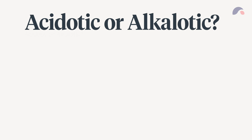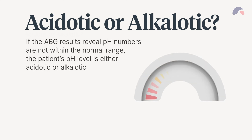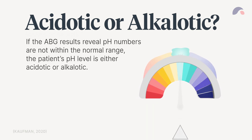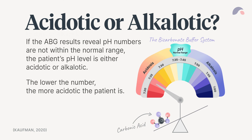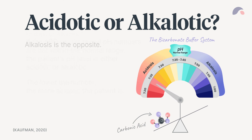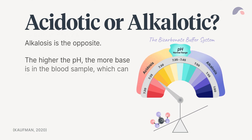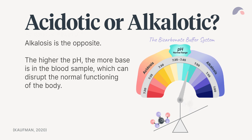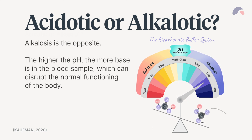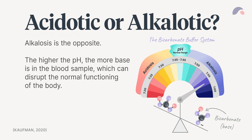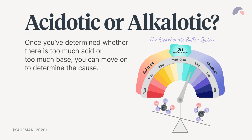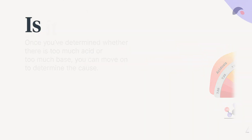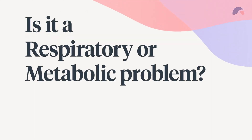Acidotic or alkalotic: if the ABG results reveal pH numbers are not within the normal range, the patient's pH level is either acidotic or alkalotic. The lower the number, the more acidotic the patient is. Alkalosis is the opposite — the higher the pH, the more base is in the blood sample, which can disrupt the normal functioning of the body. Once you've determined whether there is too much acid or too much base, you can move on to determine the cause: is it a respiratory or a metabolic problem?